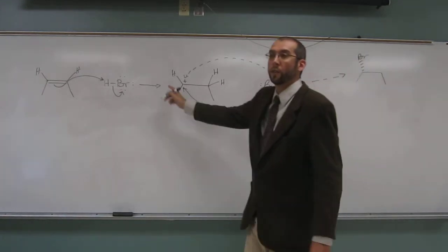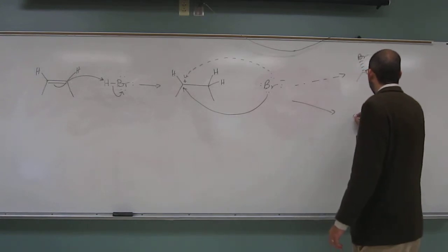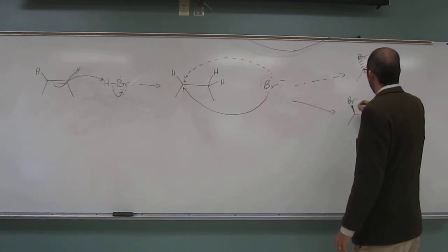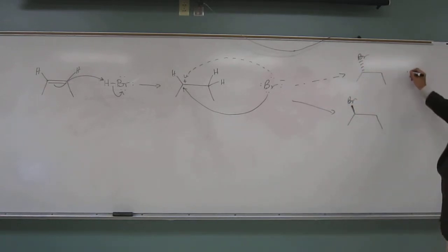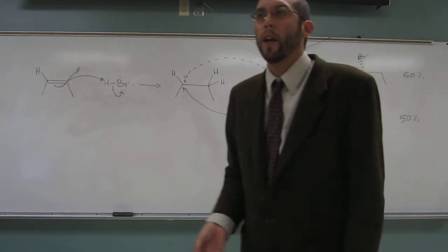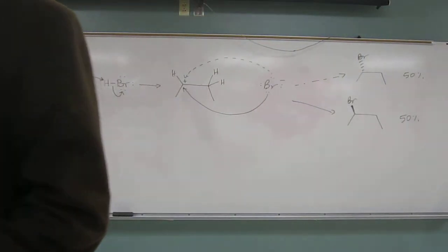If it attacks from the front, the bromine is going to be wedged, like this. We're going to get these in a 50-50 ratio. There's no reason that the bromine would attack from the front or the back anymore than it would attack from the other way.